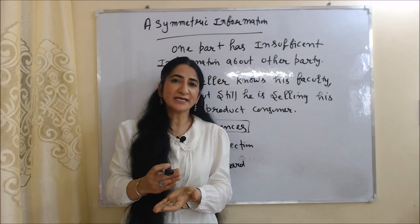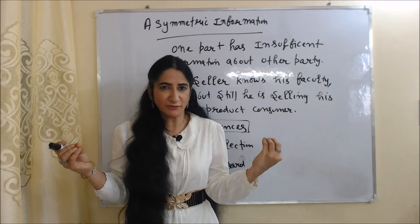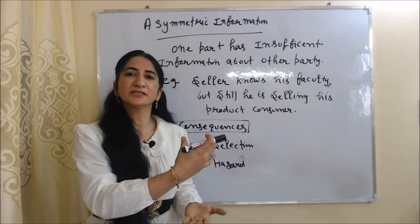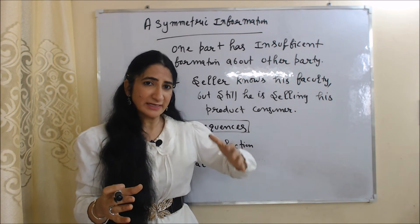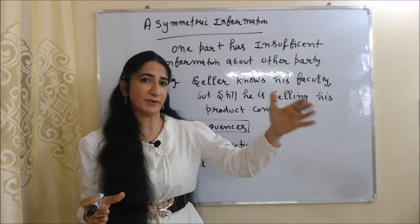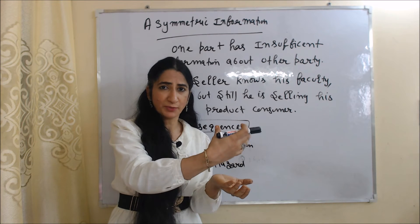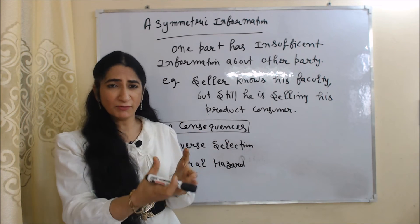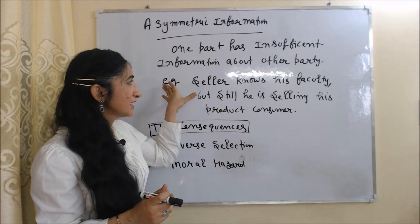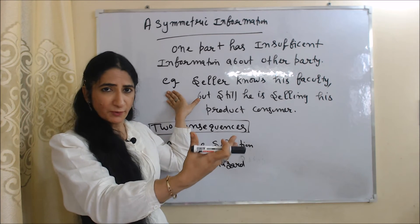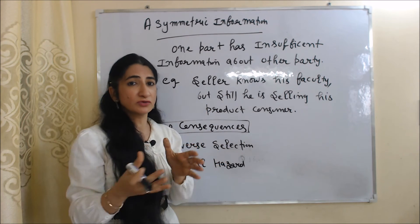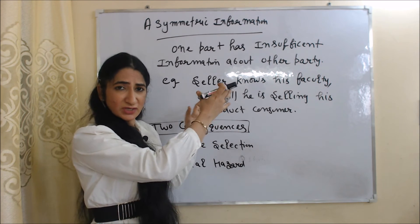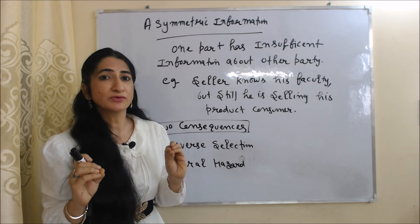Now we are going to talk about the next cause of market failure — asymmetric information. Asymmetric information means when one party has insufficient information about the other party. Sometimes buyers don't have information about the seller's product, and sometimes sellers don't have information about the buyer's intention. This leads to market failure, and asymmetric information has two consequences: adverse selection and moral hazard.